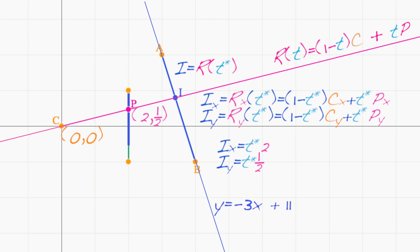i is also on the line segment AB, meaning that i satisfies the slope intercept form for AB. That is, i sub y equals negative 3 times i sub x plus 11.